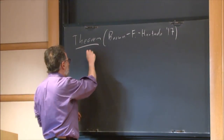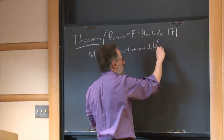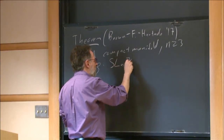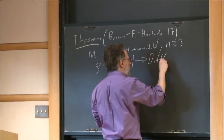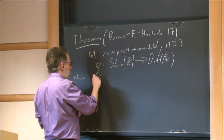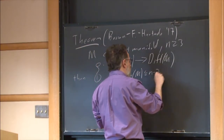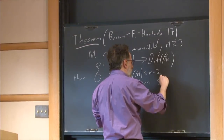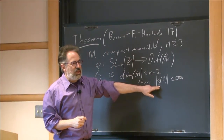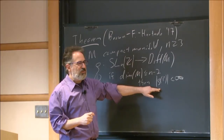So the theorem is: I'm going to need M, a compact manifold, and N, some integer greater than or equal to 3. I'm going to have a homomorphism from the group SL(N,Z) to the diffeomorphism group of the manifold. And then I'm going to have two conclusions. First is if the dimension of M is less than or equal to N minus 2, then the image of this map is finite.